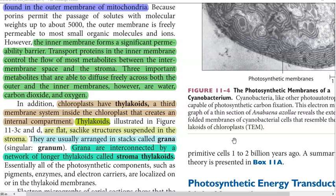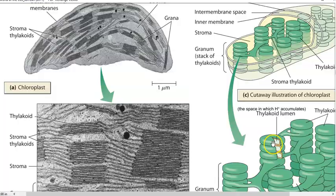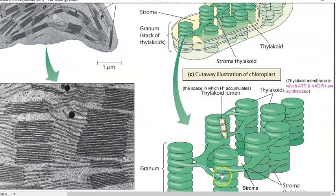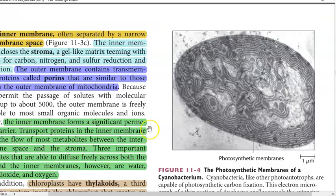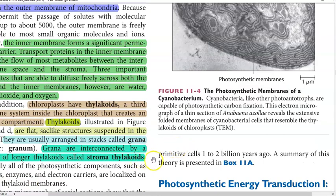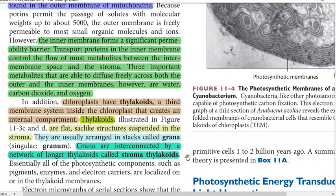Only three important metabolites can freely diffuse through both the outer and inner membrane: they are carbon dioxide, water and oxygen. Chloroplasts have thylakoid structures. These thylakoid structures present inside the chloroplast play an important role. Thylakoids form the third membrane system inside the chloroplast, something analogous to the cristae structures formed in the mitochondria - a membranous folding system that creates internal compartments.